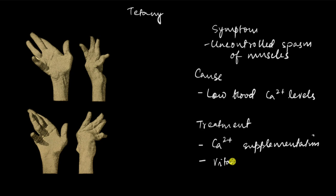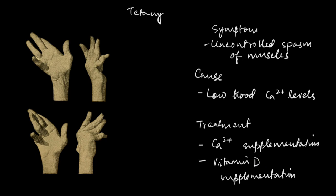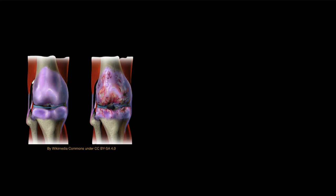The treatment for tetany is calcium supplementation and also vitamin D supplementation. Vitamin D is absolutely essential for us to absorb calcium ions from our gut. If you have a lot of calcium-rich food but don't have enough vitamin D, your body can't absorb the calcium from your gut. So both calcium and vitamin D are necessary. Those were the three muscle diseases — now let's move on to bone and joint diseases.